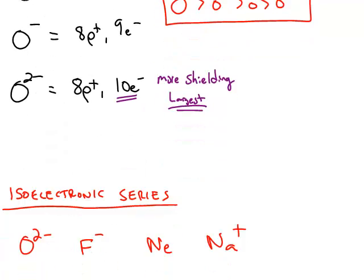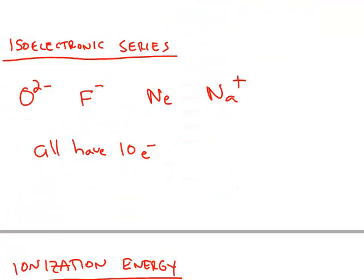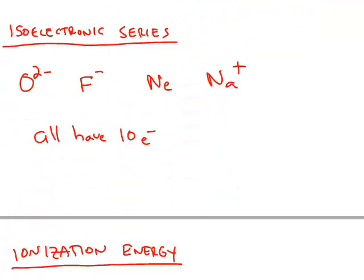You can also compare an isoelectronic series. So in this case, they obviously have the same number of electrons. All of these will have 10 electrons.